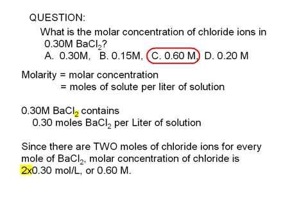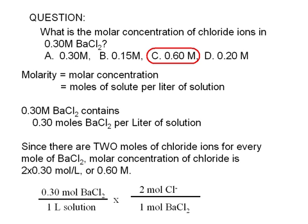Here's another way of working out this problem. We're given that the solution contains 0.30 moles of barium chloride per liter of solution. We are looking for the concentration in terms of chloride only, so we multiply by a conversion factor that converts moles of barium chloride to moles of chloride. This gives us an answer of 0.60 moles of chloride ions per liter of solution.